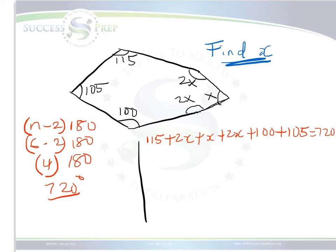Now, when we add up all the like terms, we want to focus on just adding up all the x's to start. So that's 2x plus x plus 2x, which is going to give us 5x. And then we can add up all the numbers, which is 115 plus 100 plus 105. And that's going to give us 320 equal to 720.